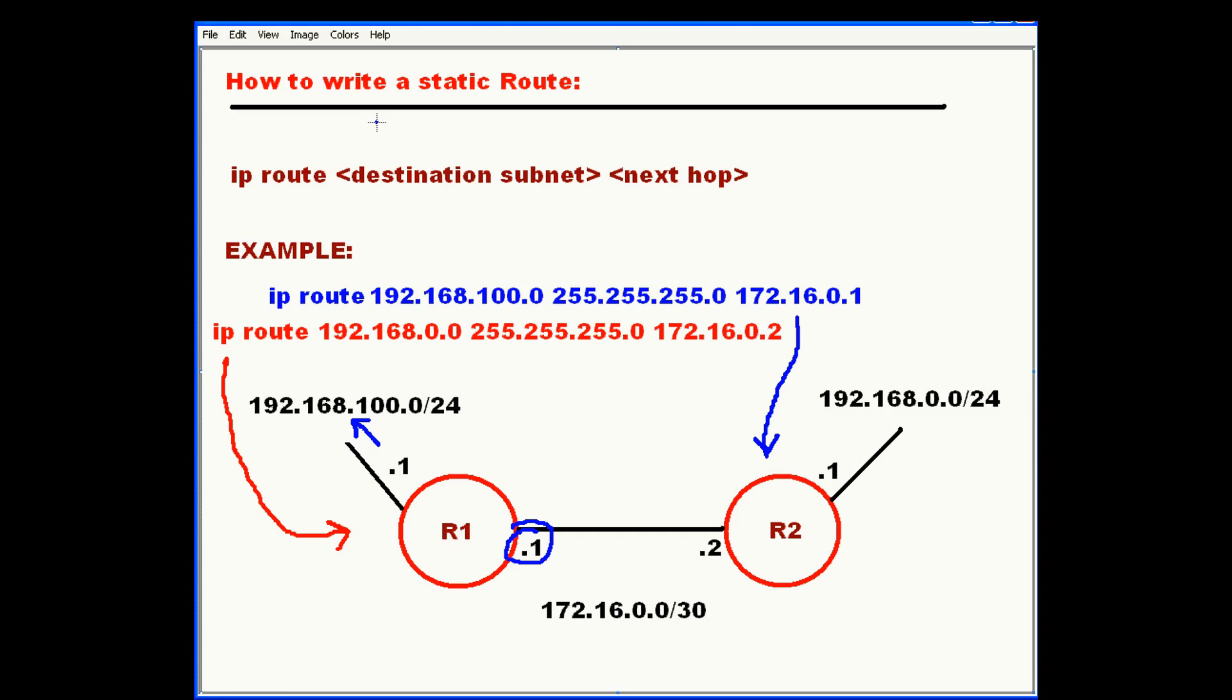A static route has an administrative distance of 1. The only thing that is more trusted than a static route is a directly connected route.